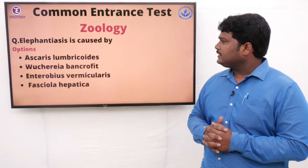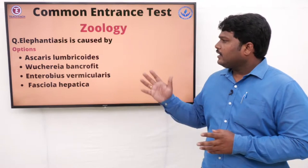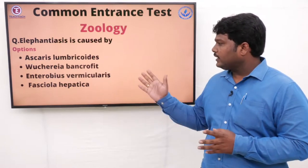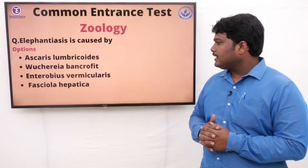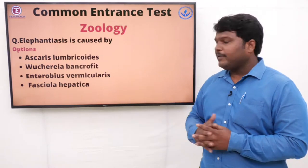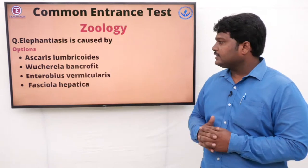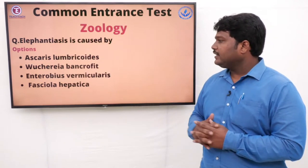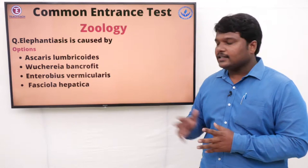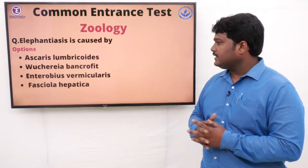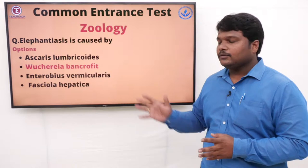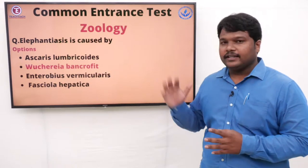Question 46: Elephantiasis is caused by. Options: A) Ascaris lumbricoides, B) Wuchereria bancrofti, C) Enterobius vermicularis, D) Fasciola hepatica. The right answer is Wuchereria bancrofti. Wuchereria bancrofti causes Elephantiasis.